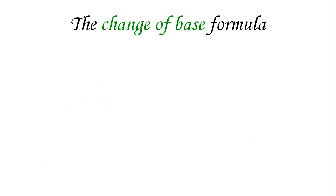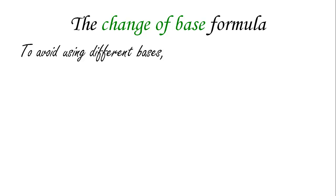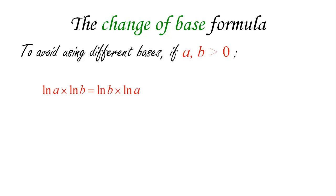We need to figure out a way of changing every other logarithm to one of these two. We want to avoid using different bases and will stick to the natural logarithm with base e. To show how the change of base works, let's take two positive numbers A and B. I'll make the bold claim that ln A times ln B equals ln B times ln A — which is simply commutativity of multiplication.